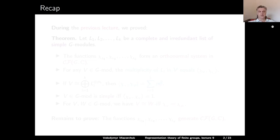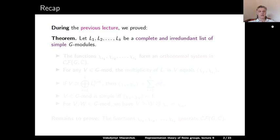Let us recall the theorem which we almost proved during the previous lecture. The actual statement proved in the previous lecture is the following. Let L1, L2, and so on Lk be a complete and irredundant list of simple G-modules. Then the characters of these modules form an orthonormal system in the vector space of all class functions for G.